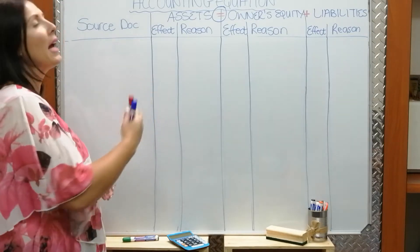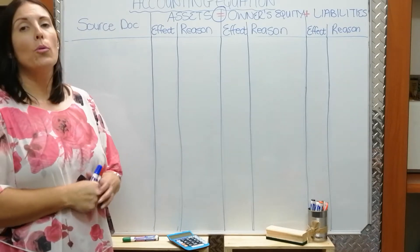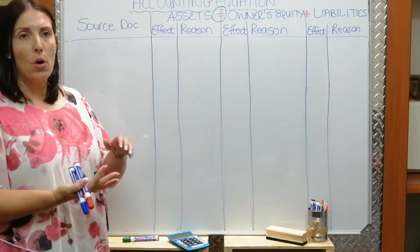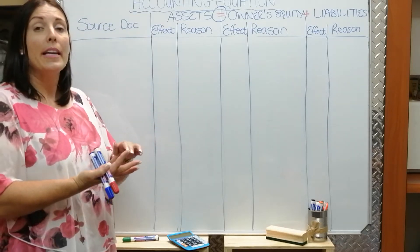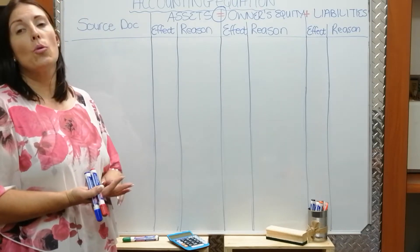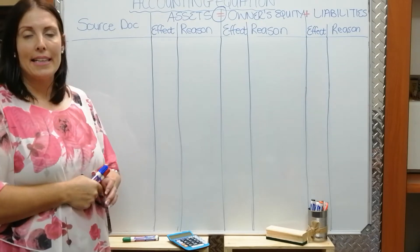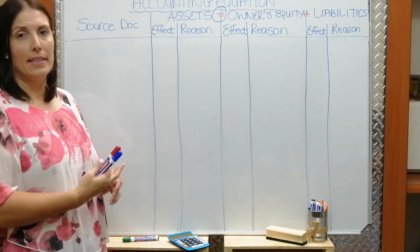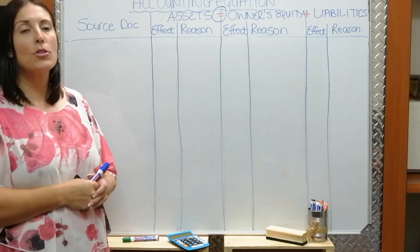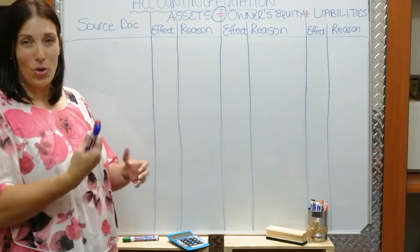So how do we analyze it on the accounting equation? Please remember this is not the only format. You can also be asked, for example, in which journal or subsidiary book this transaction is recorded, as well as the account to be debited and account to be credited. I will do that a little bit later on. This is the format that I like to use in my classroom but there are other ways to ask it as well.